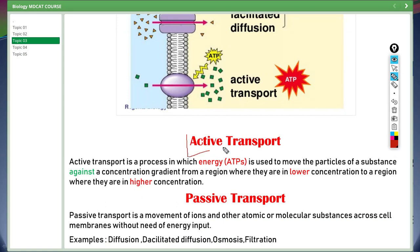Active transport is the process in which energy in the form of ATP is used to move the particles of a substance against a concentration gradient, from a region where they are in lower concentration to a region where they are in higher concentration using energy of ATP. So passive transport is the movement of ions and other atomic or molecular substances across cell membranes without need of energy input. Osmosis and filtration are also passive transport.